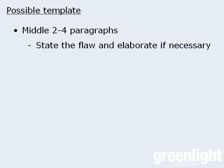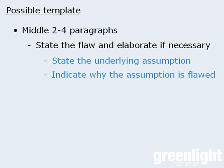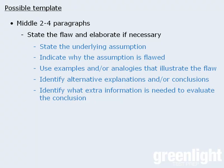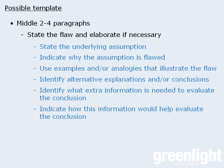Once you've stated the flaw that will serve as the topic for the paragraph, you can state the underlying assumption and indicate why the assumption is flawed. You can use examples and/or analogies that illustrate the flaw. You can identify other possible explanations and/or conclusions in the argument. Identify what extra information is needed to evaluate the conclusion, and indicate how this extra information would help evaluate the conclusion. These are just options.